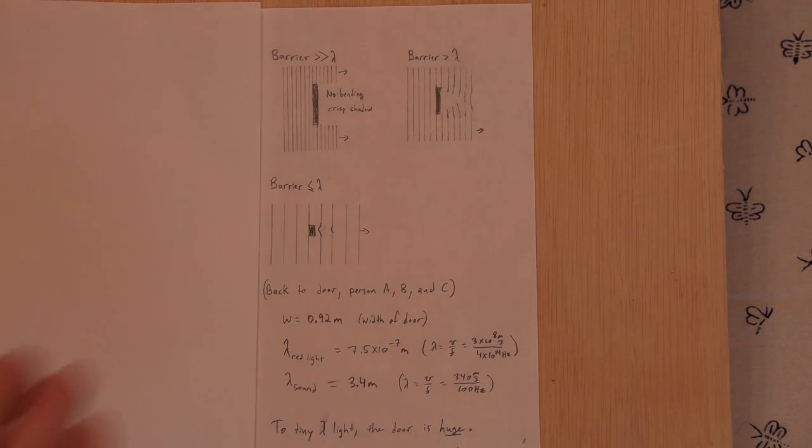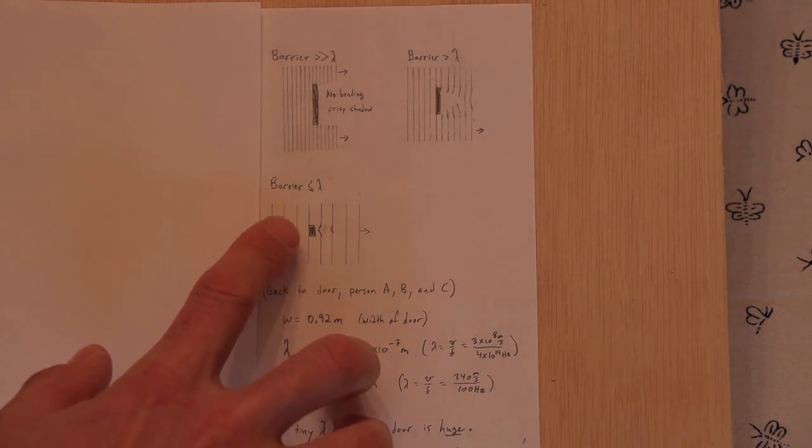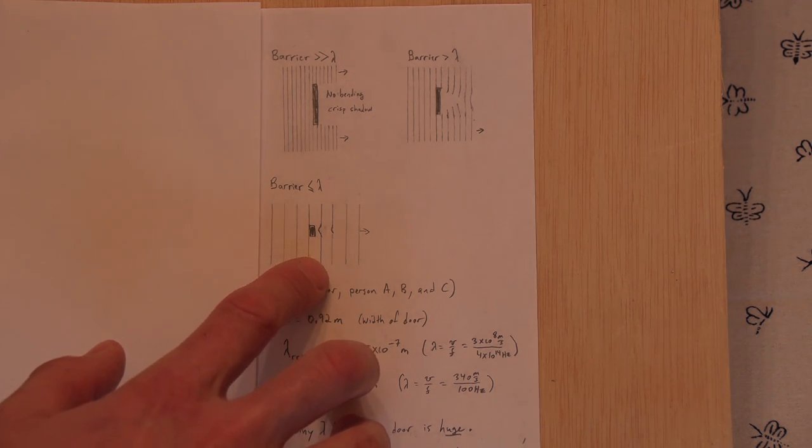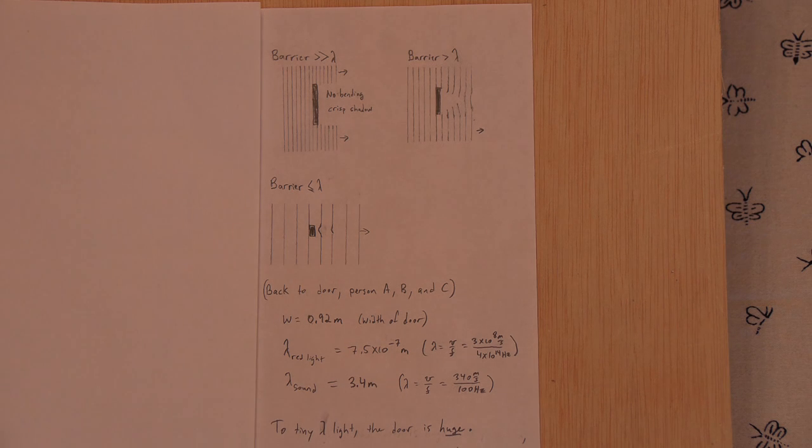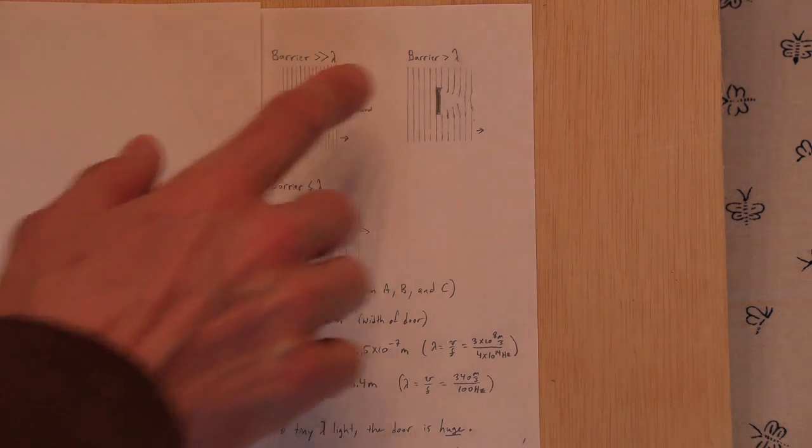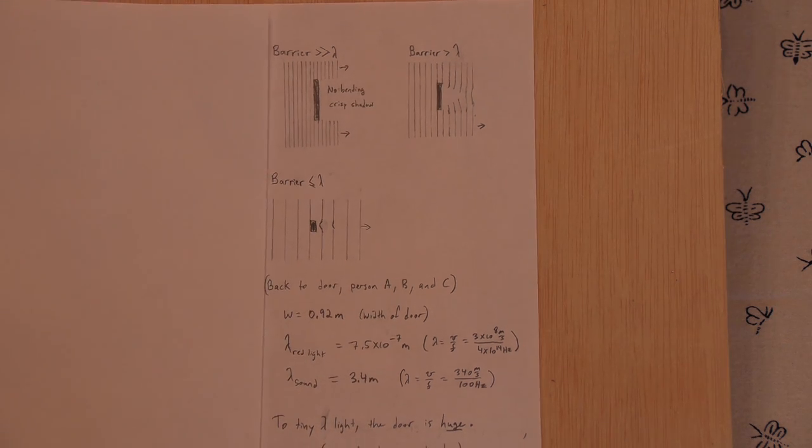The third situation is if the barrier is less than or equal to the wavelength, then the waves curve in and fill in the gap completely. So it's like the barrier isn't even there. Again, the bending, the diffraction depends on the comparison of the wavelength to the obstacles.